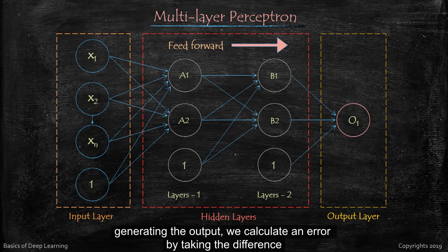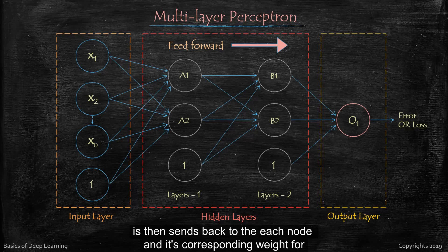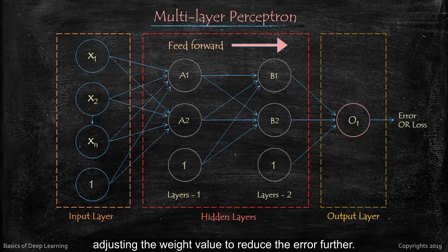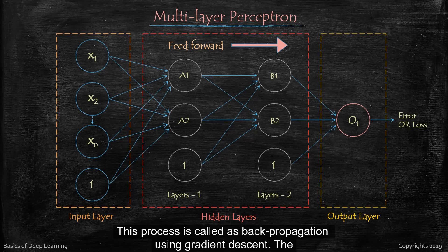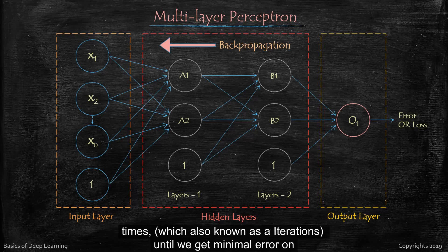After generating the output, we calculate an error by taking the difference between output value and actual value. This error is then sent back to each node and its corresponding weight for adjusting the weight value to reduce the error further. This process is called as back propagation using gradient descent. The feed forward and back propagation process continues for several times, which also known as iterations, until we get minimal error on the output.